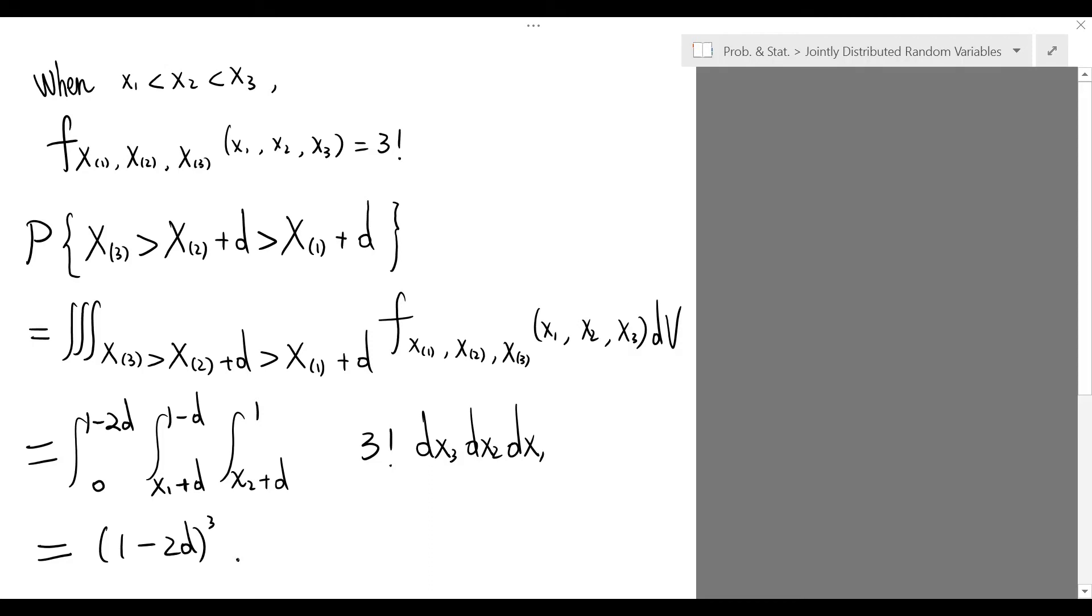That is, the probability of no two people are less than d miles apart on this 1 mile long road is given by 1 minus 2d cubed. And this completes our first application of the order statistics.